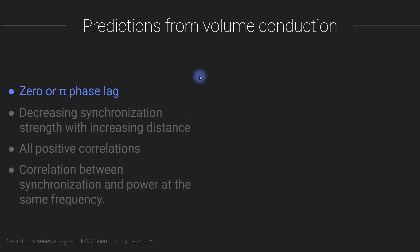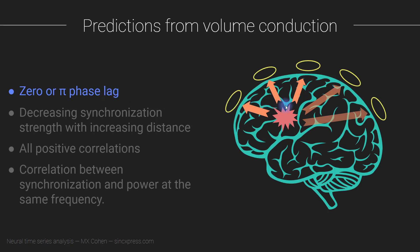Let's start with the predicted patterns. If you compute synchronization between two electrodes and your synchronization is actually due to volume conduction — not true synchronization between spatially distinct neural populations, but instead attributable to a single source in the brain simultaneously projecting to both electrodes — then you can expect four patterns of results. First, you will expect to see zero or pi phase lag, because volume conduction is instantaneous. Electrical fields travel through the brain, skull, and skin basically instantaneously.